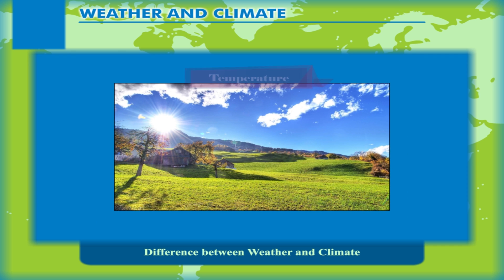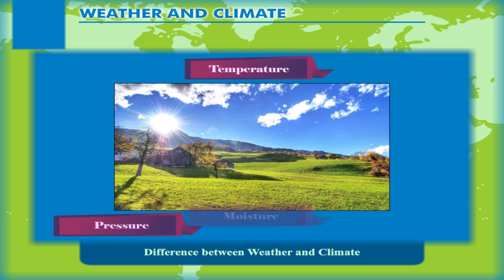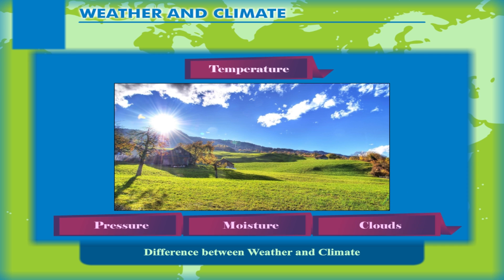The conditions of temperature, pressure, moisture, clouds, etc. that change very frequently — maybe in a day or two — and are localised over a small area, a city or a district, are referred to as weather.